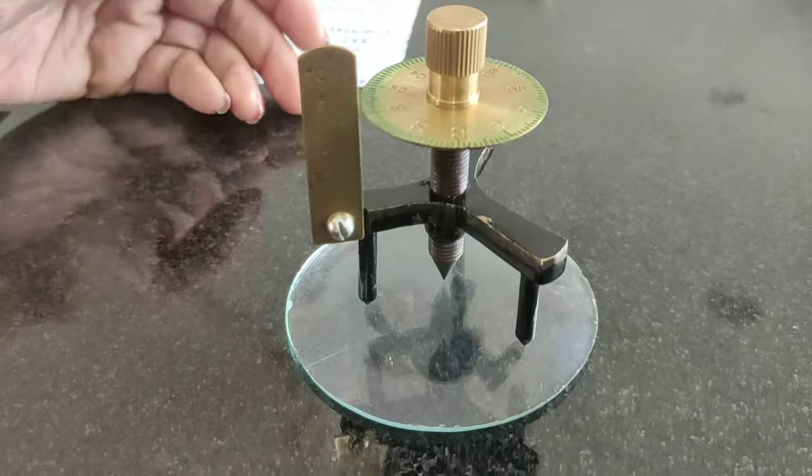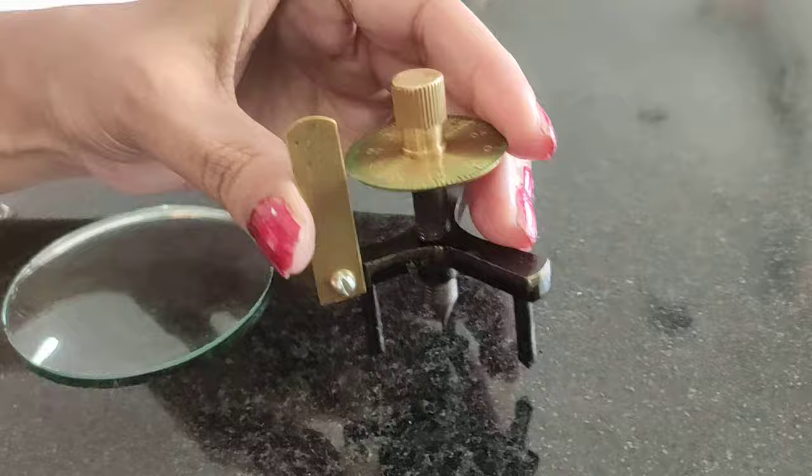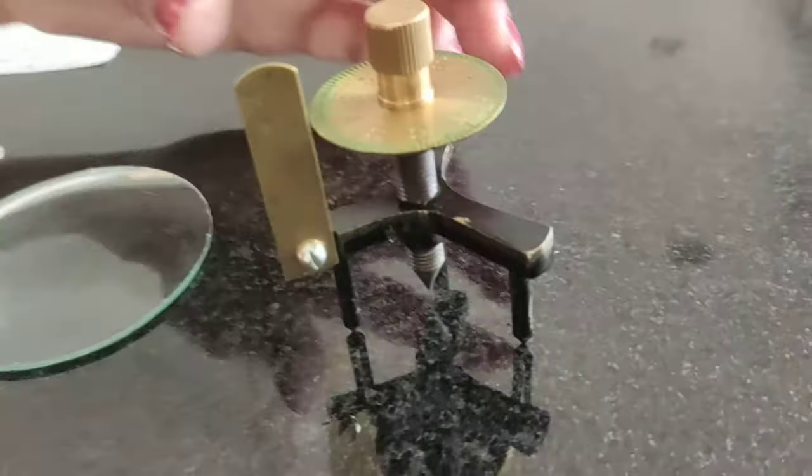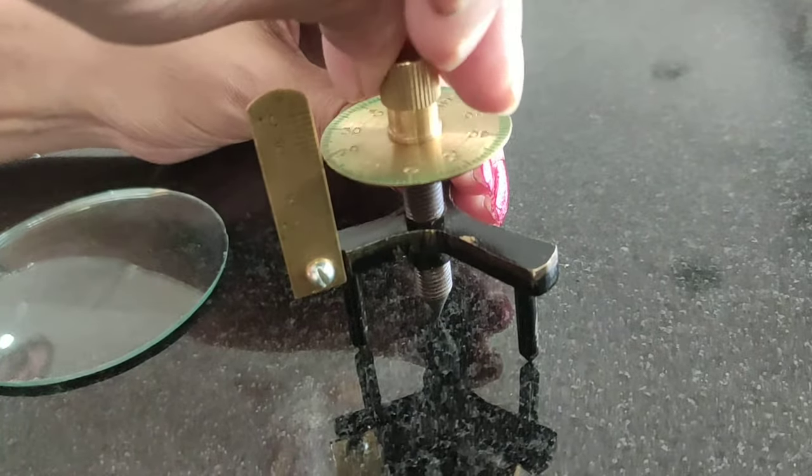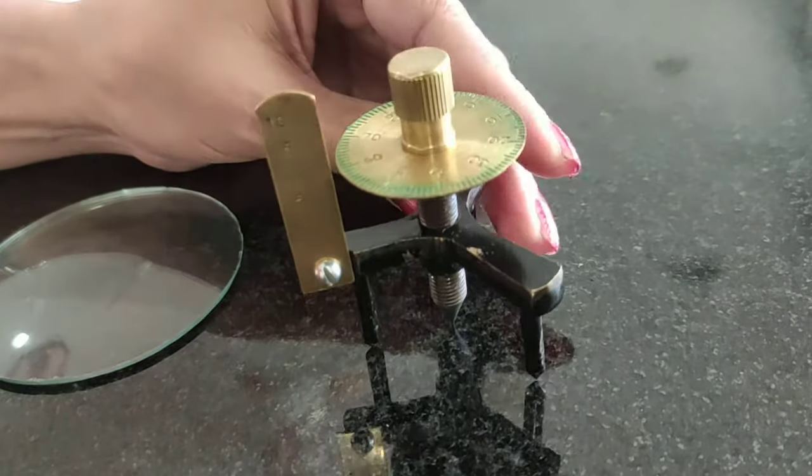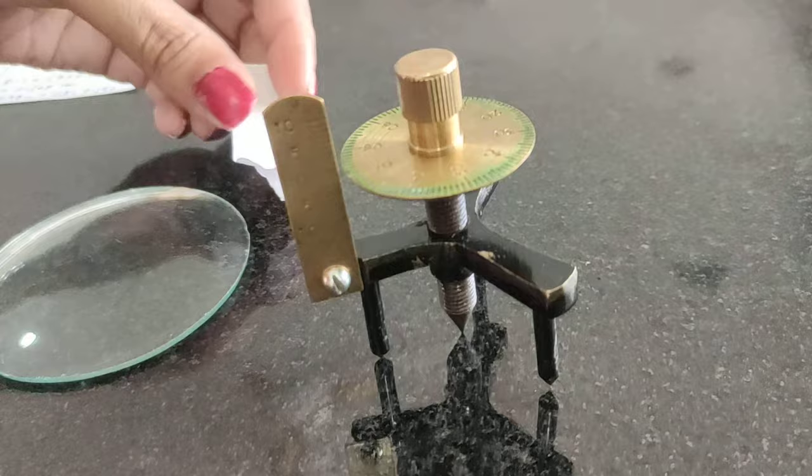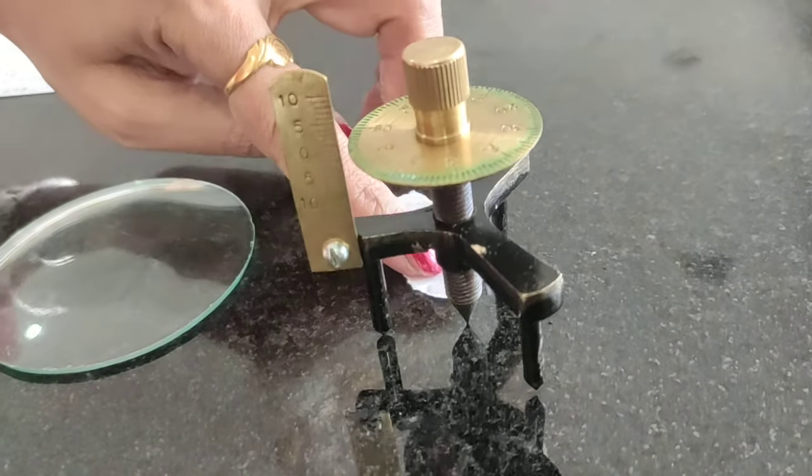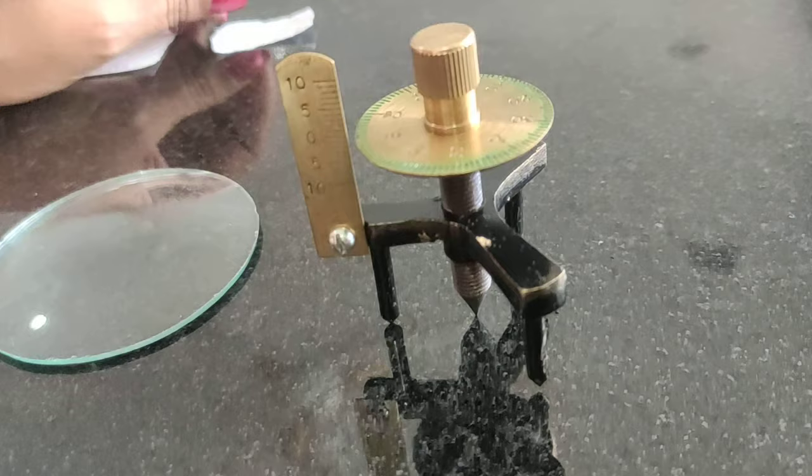At this position we are getting the reading 0.108 cm. Now take the spherometer on the plane surface. You can see the central screw is not touched to the plane surface. Rotate the central screw in the downward direction until it touches the plane surface. Now again check whether it is in contact with the plane surface.